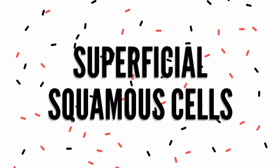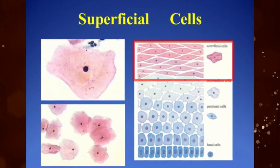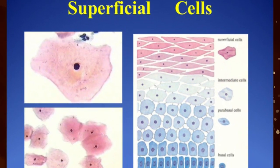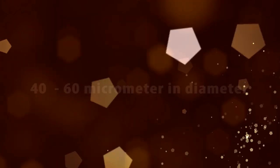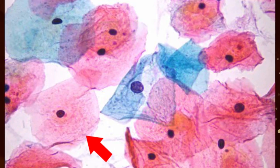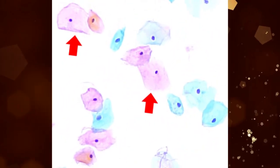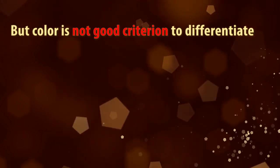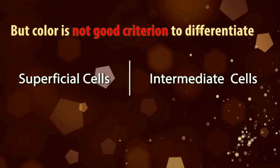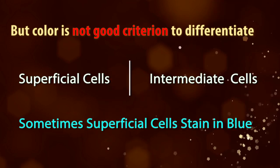Superficial Squamous Cells comprise the outermost layer of the non-keratinizing epithelium. These cells are large and flat polygonal cells, 40 to 60 micrometers in diameter. We can see them singly or in clusters. The cytoplasm is abundant and usually pinkish to orange in color, and occasionally folded. However, color is not a good criterion to differentiate superficial squamous cells from intermediate squamous cells, because sometimes superficial cells also stain blue.